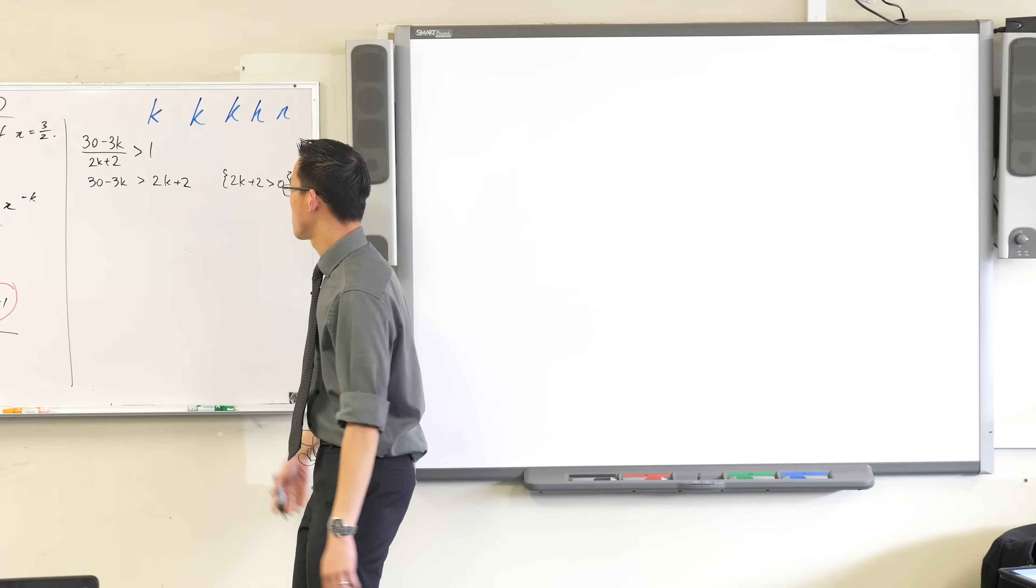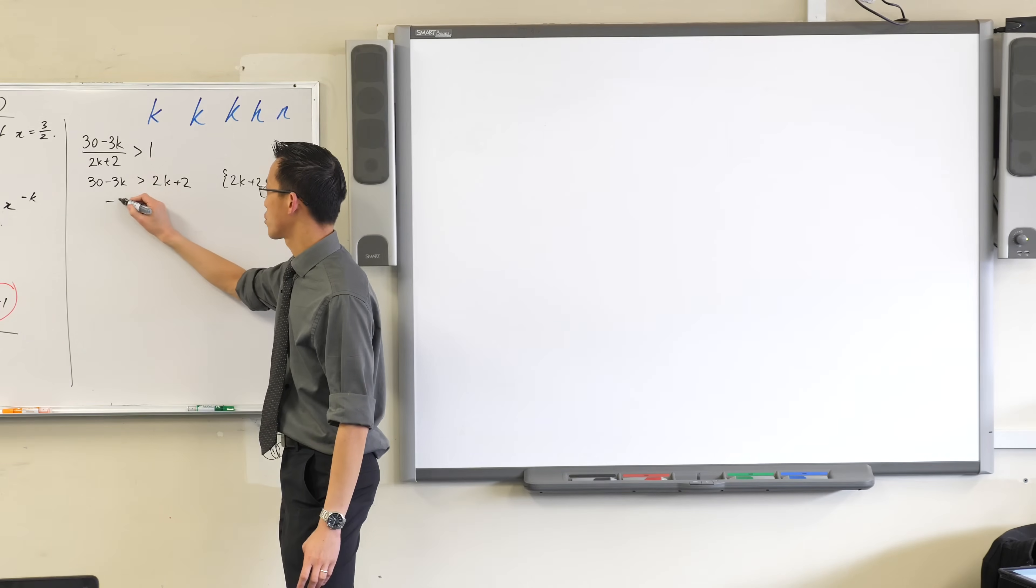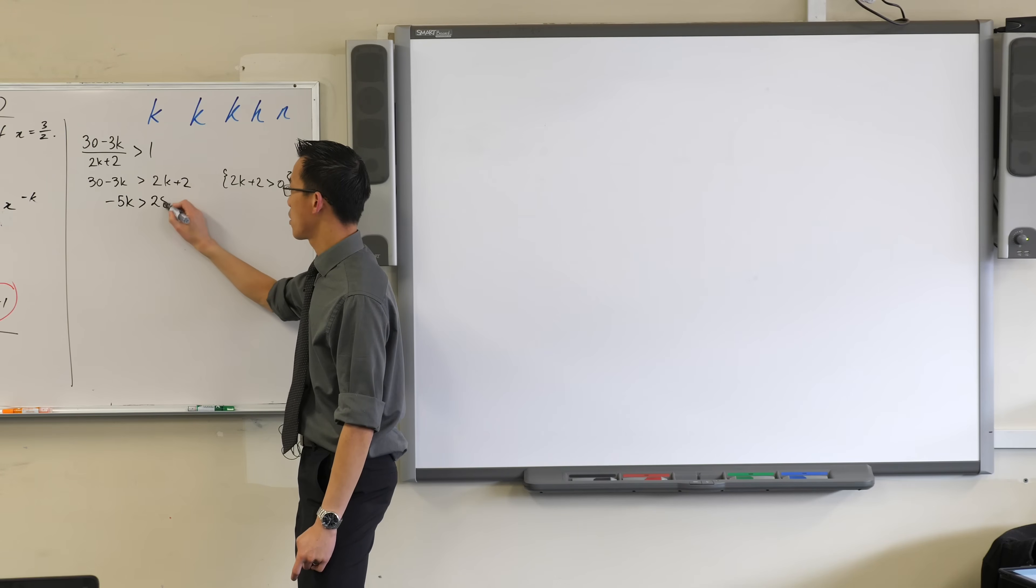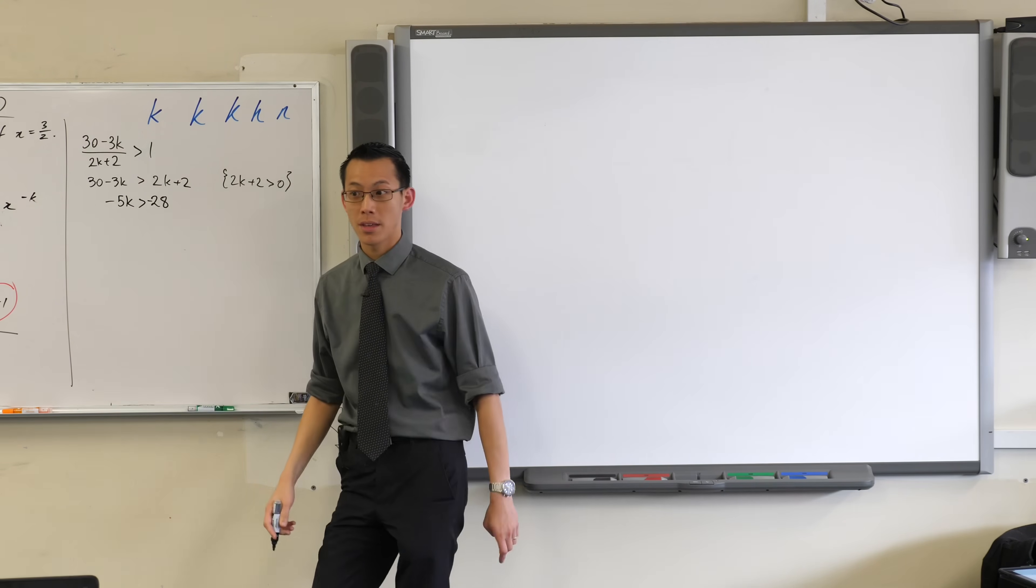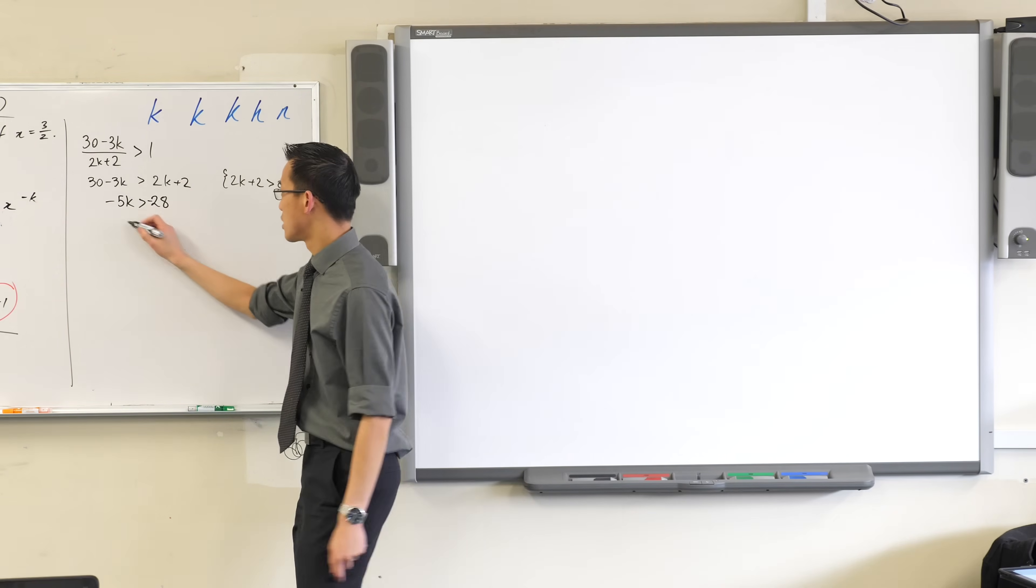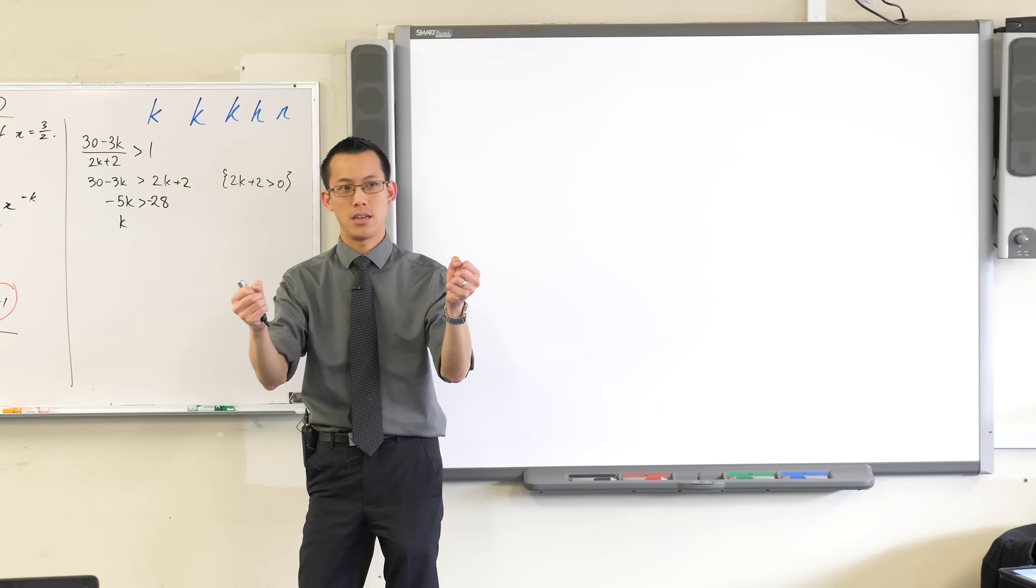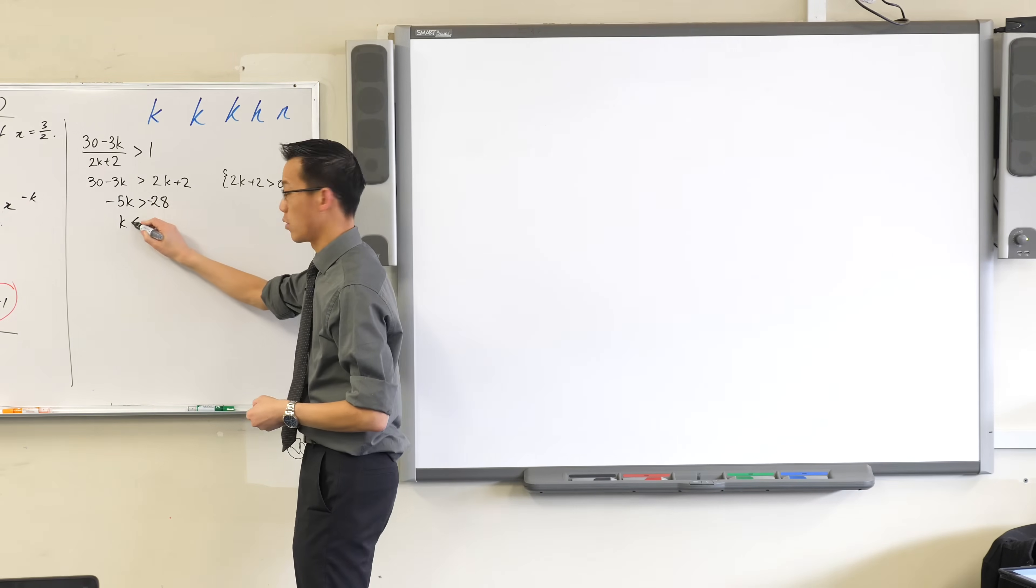Now I need to collect some like terms, so I'm going to subtract 2k from both sides, I'm going to subtract 30 from both sides. I now want to solve for k, so I divide through by negative 5, which means my inequality switches around, so I end up with this.